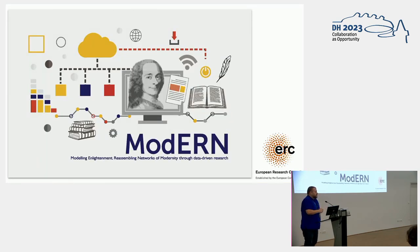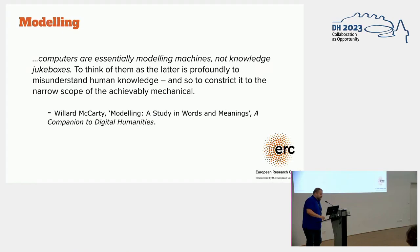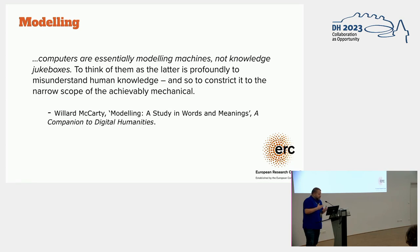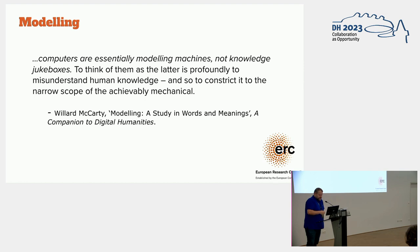This project is part of an ERC-funded consolidator grant called Modern — Modeling Enlightenment, Reassembling Networks of Modernity Through Data-Driven Research. It's based on two core axes, one being modeling — modeling as a sort of iterative way of thinking about new approaches to literary history. We can think about all the great works that Willard McCarty has published on modeling as a fundamental shared methodology for digital humanities, where computers are essentially modeling machines and not knowledge jukeboxes, which is a nice image. We should use the force of these modeling machines to really push the boundaries of thinking about data-driven research and literary history.